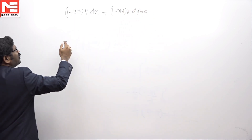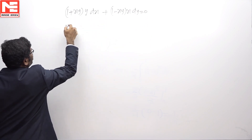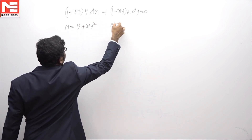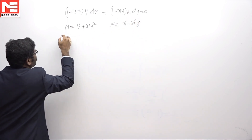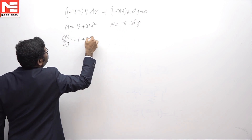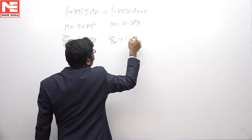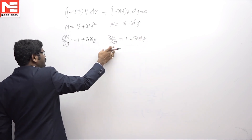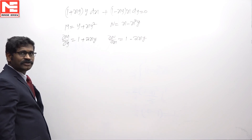I am verifying it is in the form M dx + N dy = 0, that is why I am verifying for exactness. Here, M = y + xy², N = x - x²y. Del M by del y is 1 + 2xy, del N by del x is 1 - 2xy. Clearly it is non-exact, so I am going to find an integrating factor to make it exact.